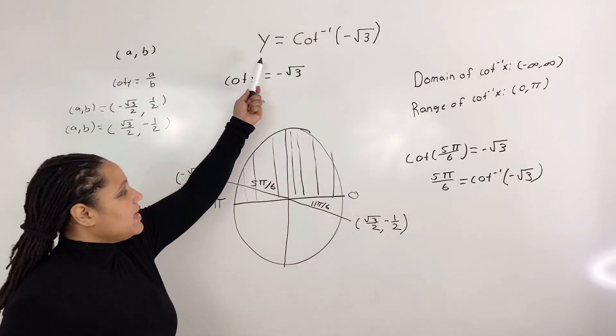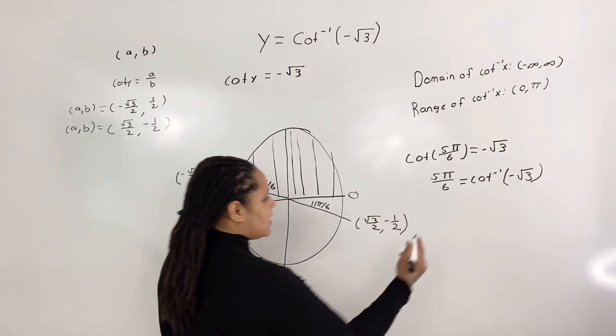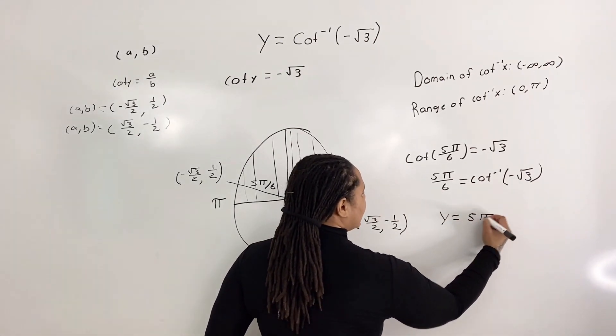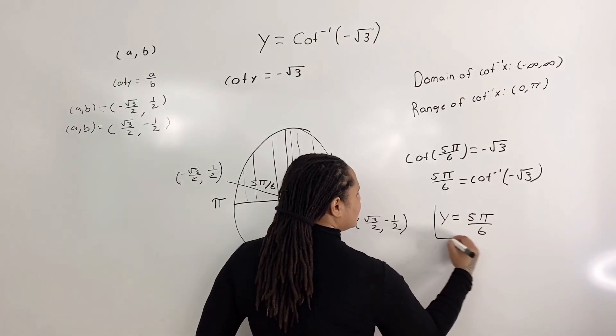which means that 5 pi over 6 equals cotangent inverse of negative root 3. And we're looking for our y value, so we say that y equals 5 pi over 6.